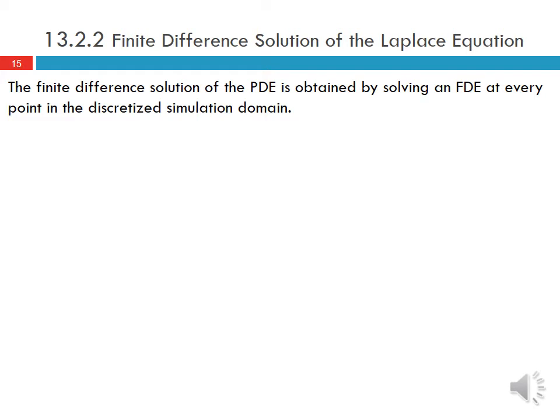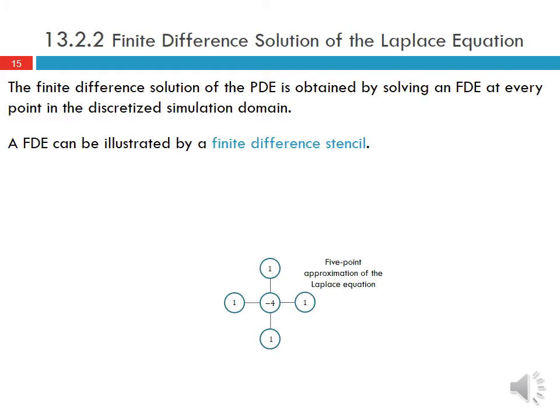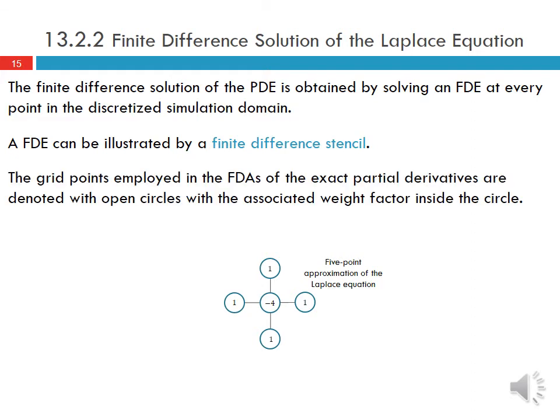The finite difference solution of the PDE is obtained by solving this finite difference equation at every point in the discretized solution domain. The FDE can be illustrated by a finite difference stencil, where the grid points in the finite difference approximations are denoted with open circles with the associated weight factor inside the circle.